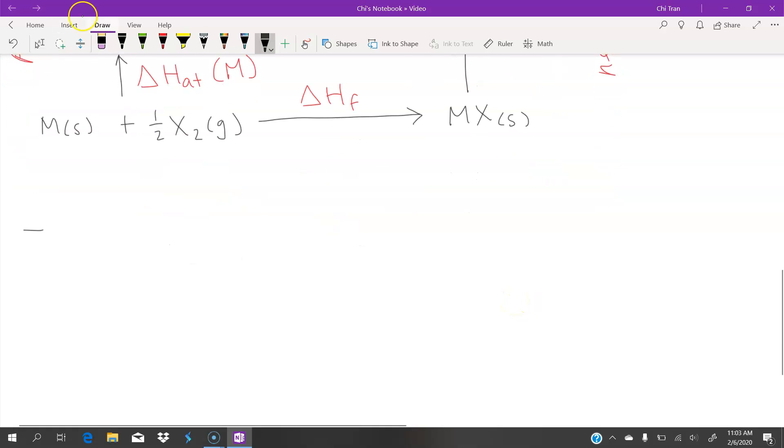We have an equation that looks like this: the enthalpy of formation equals the enthalpy of atomization of the metal plus the enthalpy of first ionization energy of the metal, the enthalpy of atomization of the halogen, the enthalpy of electron affinity of the halogen, and lastly the enthalpy of the lattice. But remember, the lattice sign is switched.